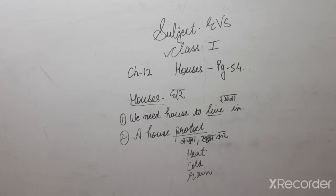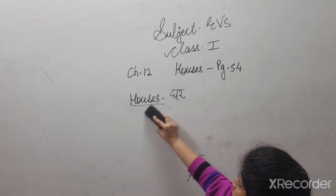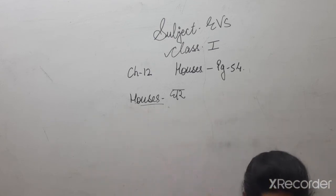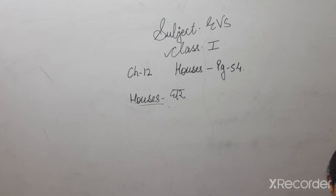Next line, houses are made of different materials. Jo humare ghar hai, woh different materials, materials means cheezon se banta, jaise eint, patthar, ye materials ho gaya. Such as mud, straw, wood, brick, cement, iron, and steel. So these are the different materials.